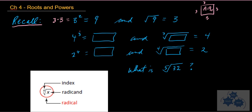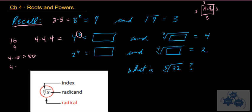We also talked about powers or exponents greater than 2, like 3. So this is 4 cubed — 4 times 4 times 4. 4 times 4 is 16, and 16 times 4: think of it as 4 times 10 is 40, and 4 times 6 is 24. Add those up and you get 64. That's a useful mental math strategy: multiply the tens, then the ones, and add them up.